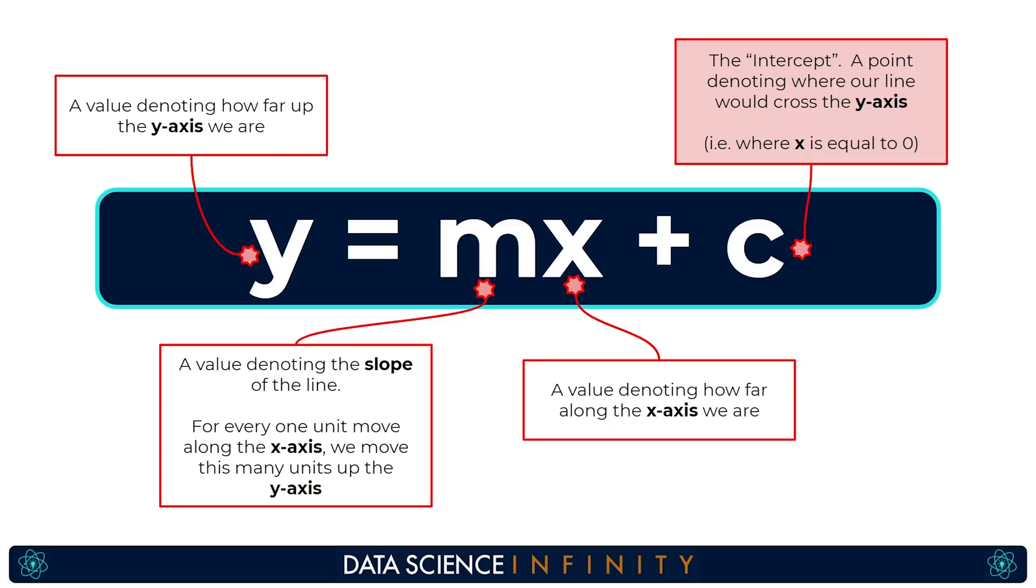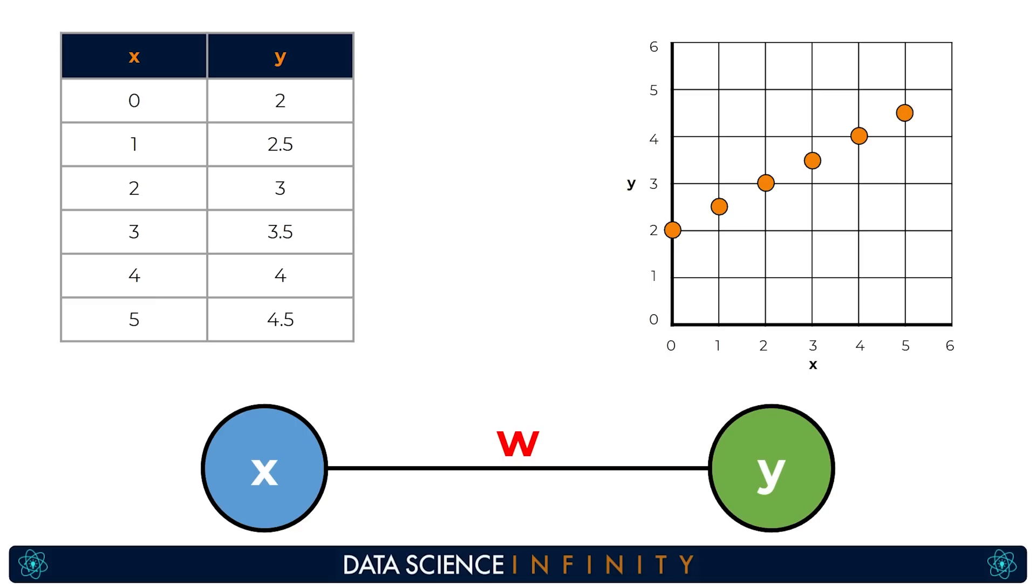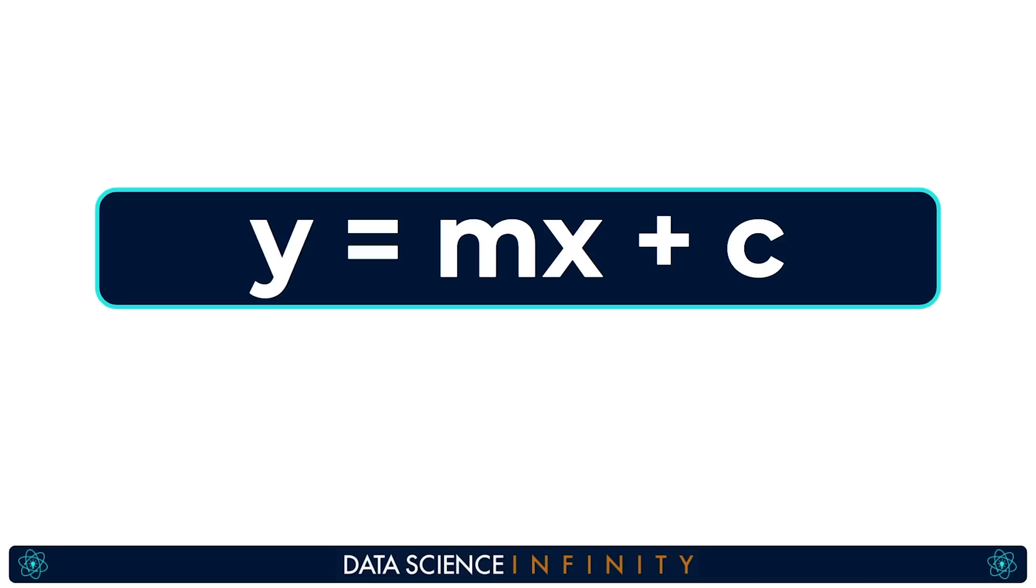But why is this important here in this tutorial on weights and biases in neural networks? Well interestingly enough each neuron in our network is essentially doing this very same exercise that we talked about before. It is taking in x values and looking to find a mapping that helps us find y values which is exactly the same as what we are trying to do here. We are saying y is equal to some function that we apply to x. Our slope in this case which we call m here is the same as our weight value in the neural network. It is the value we multiply our known x values by in order to increase or decrease y.